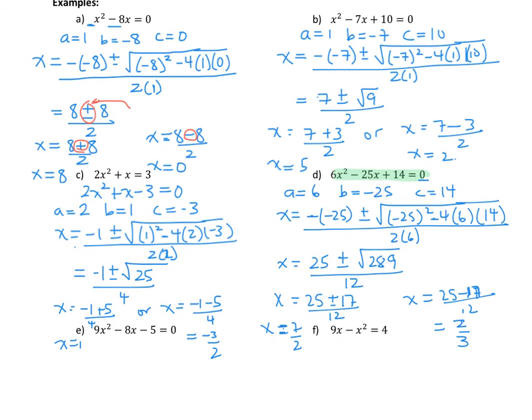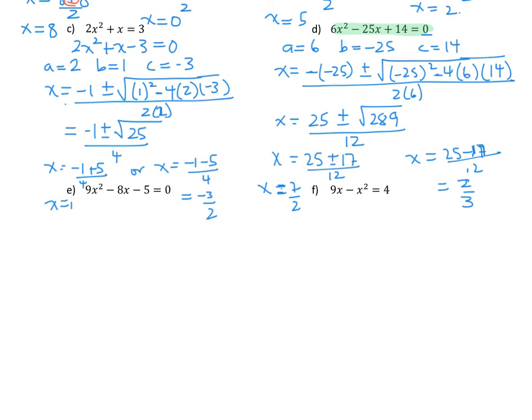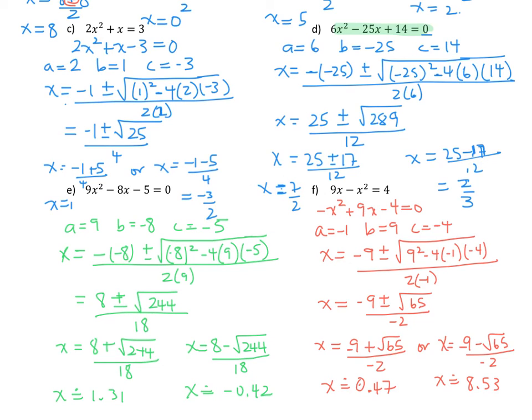Alrighty. So I have a couple more examples here for you to try. So you can take some time and try those ones, put the video on pause, and then you can check your work with that. All right, so I have my solutions done now for the last two questions. Just make sure again that you have zero on one side of your equal sign before you state your a, b, and c, and then just go through the process of using that quadratic formula. I've taken my answers to two decimal places because they did not work out to be beautiful answers in terms of a whole number or a fraction. So hopefully that makes sense for you. Let me know if you need some help with anything, and I would be glad to help you.